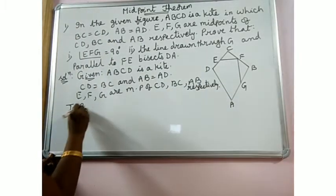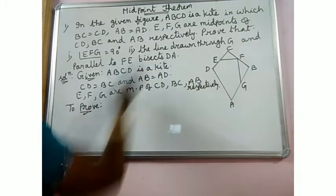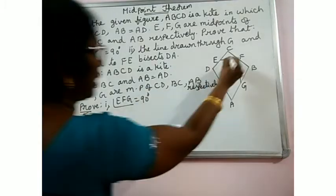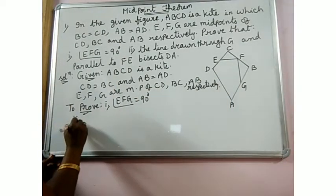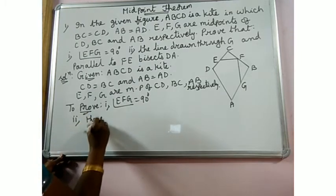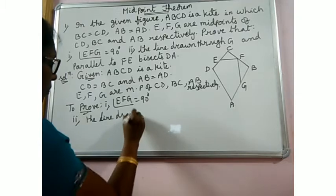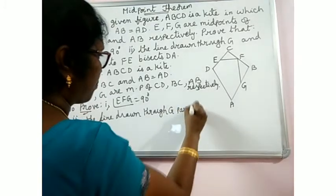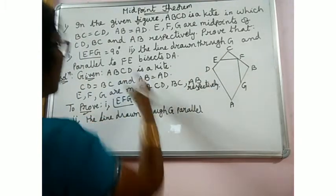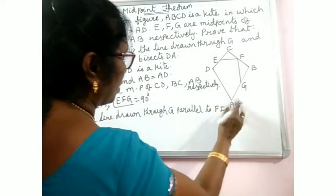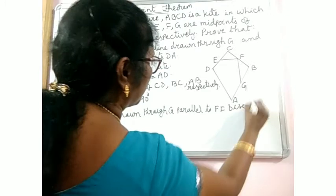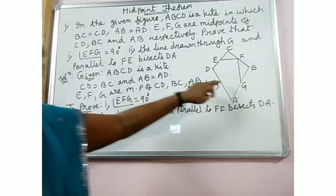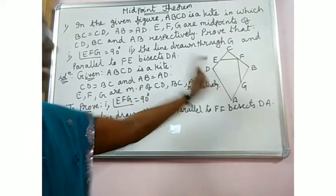What to prove has two parts. First part: prove that angle EFG is 90 degrees. Second part: prove that the line drawn through G, parallel to FE, bisects DA.